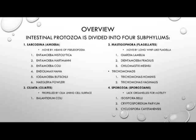The organisms we're going to cover for the intestinal protozoa can be divided into four subphylums. First, we'll cover the Sarcodina, or the amoeba. They move by means of pseudopodia and include the organisms Entamoeba histolytica, Entamoeba hartmanni, Entamoeba coli, Endolimax nana, Iodamoeba bütschlii, and Naegleria fowleri.